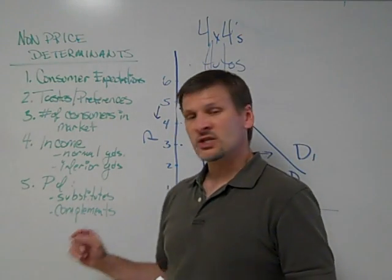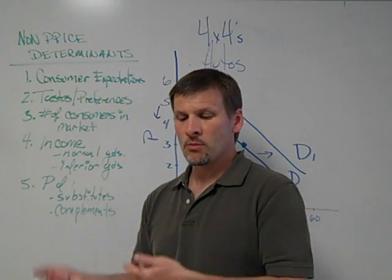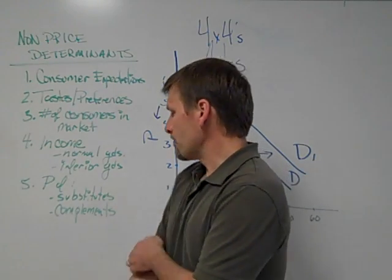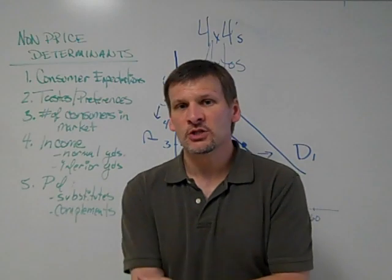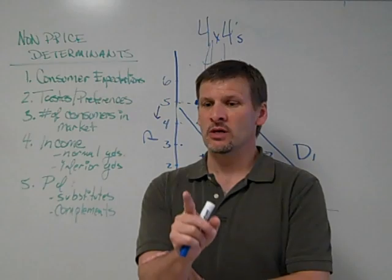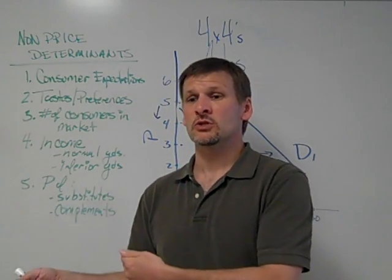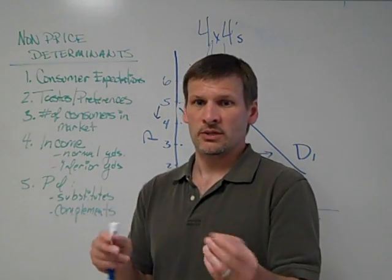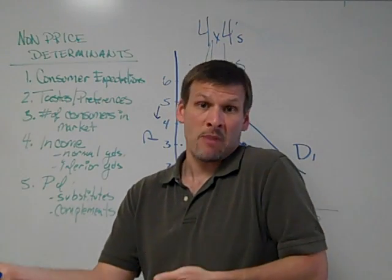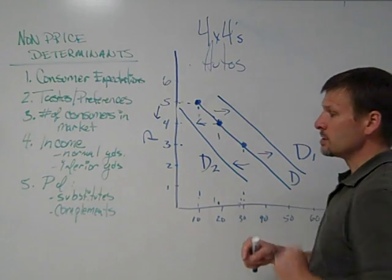Last of all, the price of substitutes and complements. I guess if we wanted to consider four-by-fours and maybe four-door sedan vehicles as a substitute. If I increase the price of sedan vehicles, then the demand for four-by-fours as a near substitute was probably going to increase. I've got the choice of sedan. I've got the choice of a four-by-four. Sedans increase in their price. I'm going to demand more four-by-fours. And so demand in this case would shift from D2 to D1.